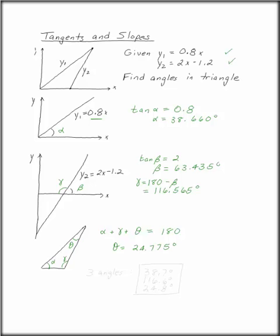So your three angles in your triangle are 38.7 degrees, 116.6 degrees, and 24.8 degrees.